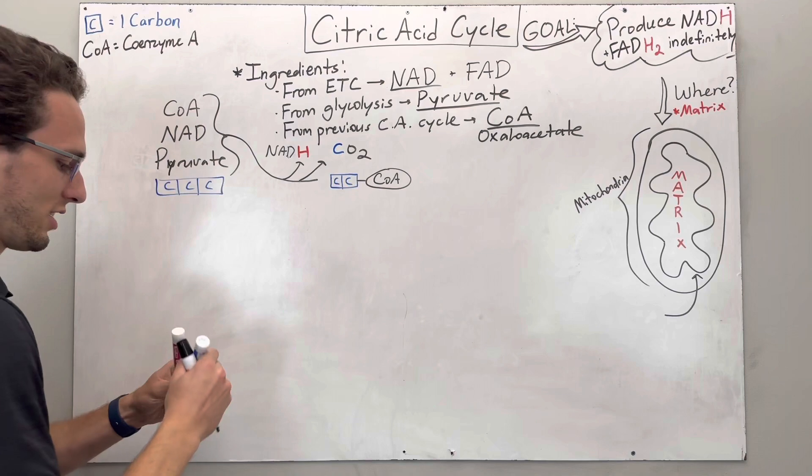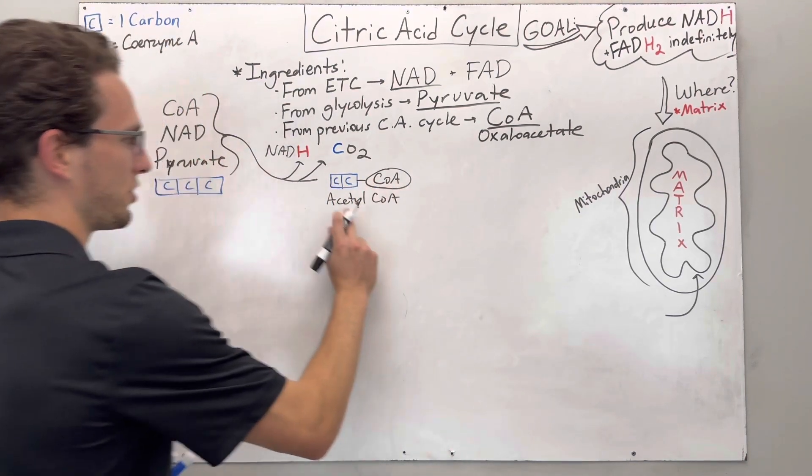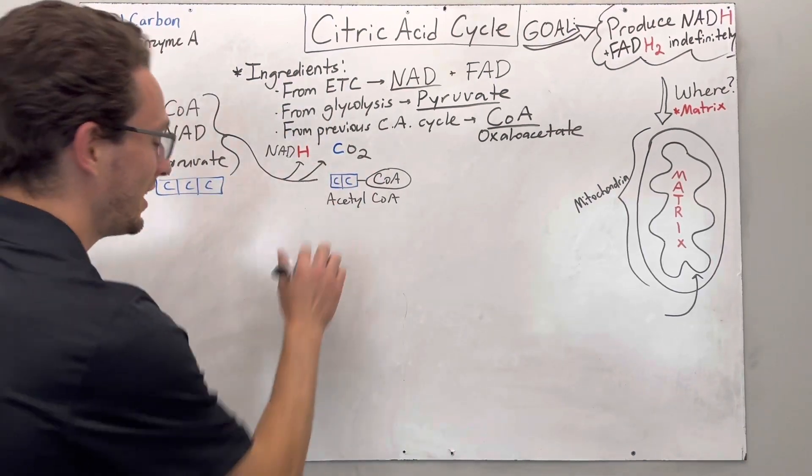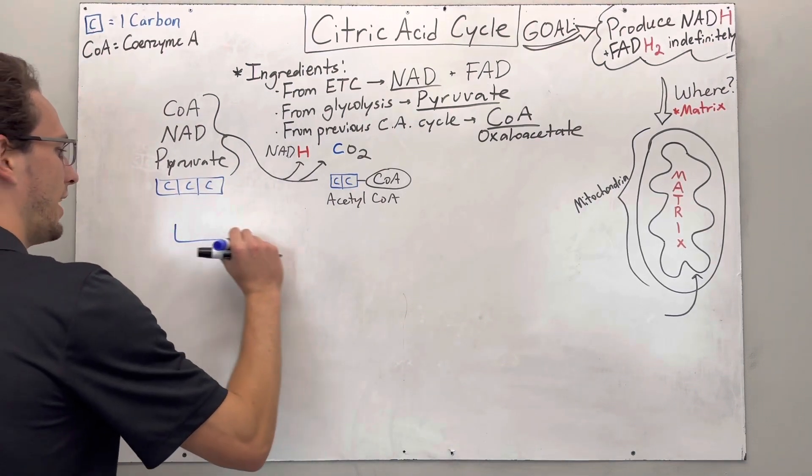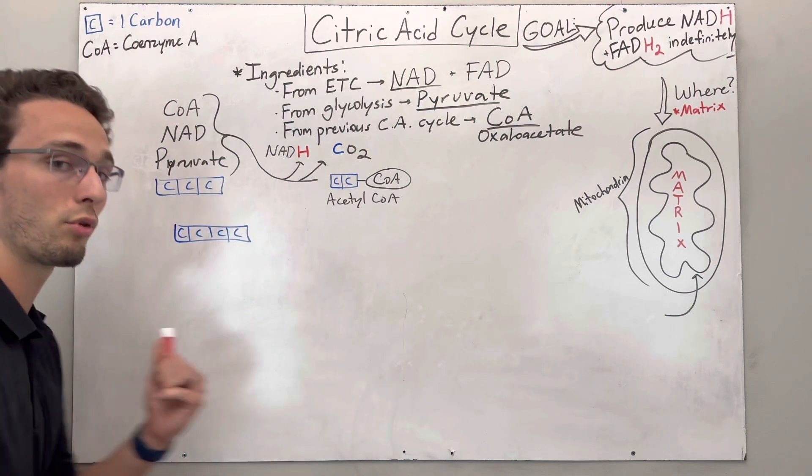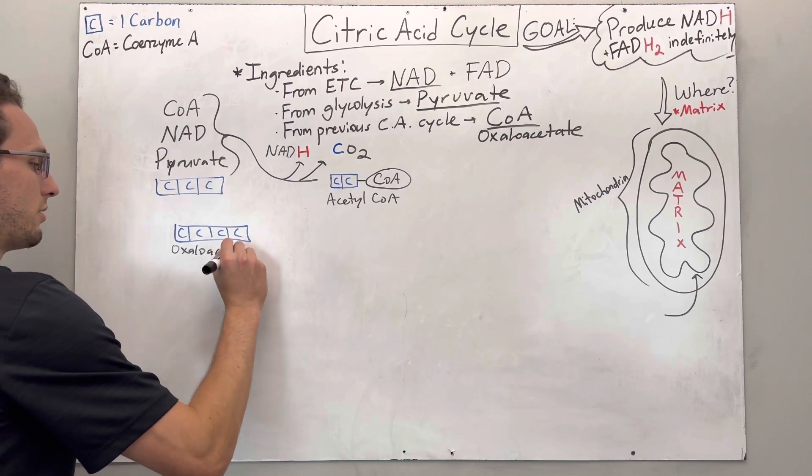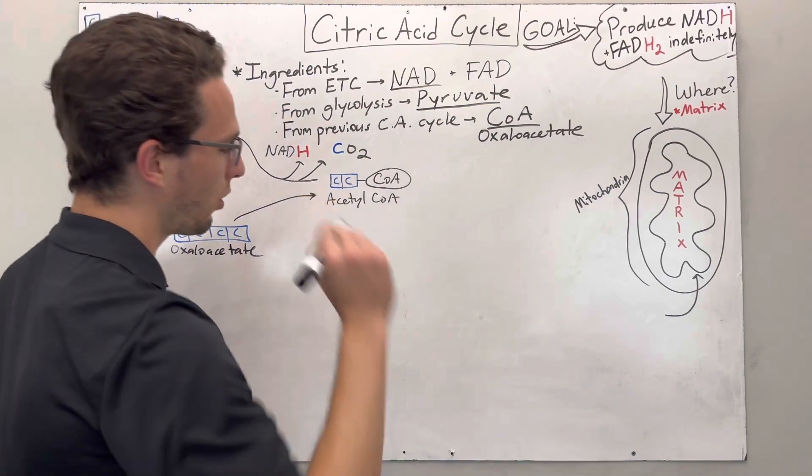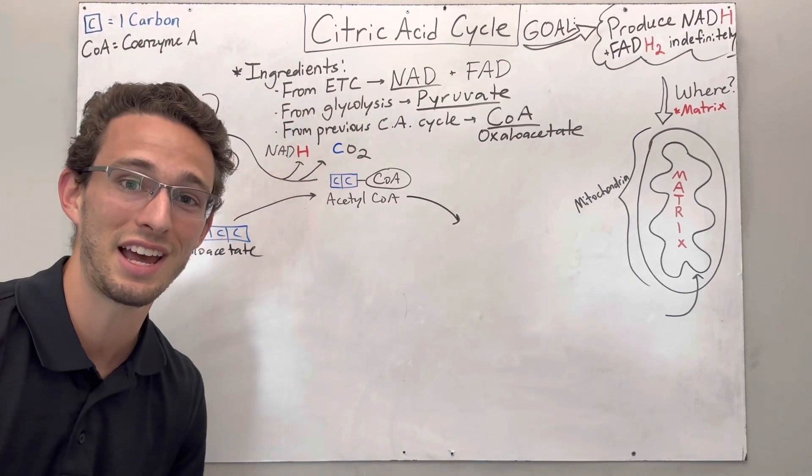So now that we've got this molecule, I'll write it out. It's called acetyl-CoA. Acetyl refers to those two carbons, a couple hydrogens in there. CoA is that coenzyme A. It's actually going to combine with a four-carbon molecule that I've already mentioned. That's going to be oxaloacetate. This is going to be left over from the previous citric acid cycle. So here is oxaloacetate. These two guys are going to come together. And they are going to produce a very, very important intermediate. It's named after the cycle.